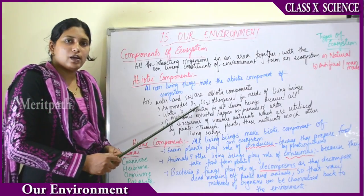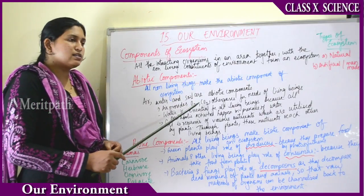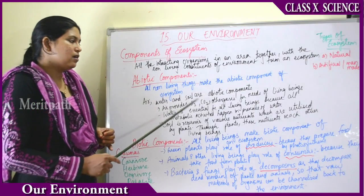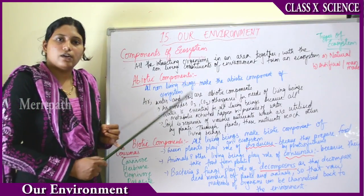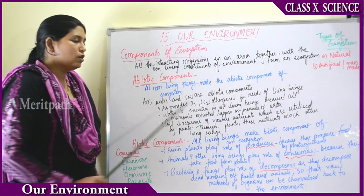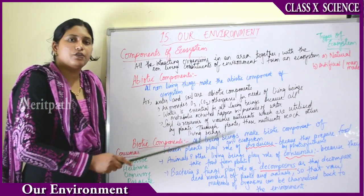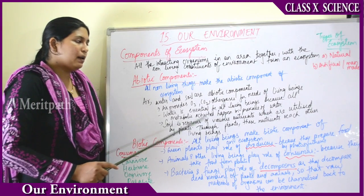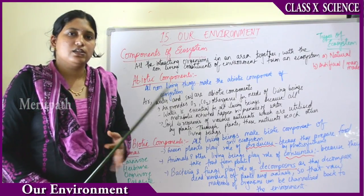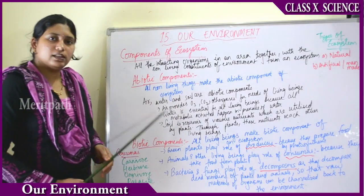Examples of abiotic components are air, water, and soil. Air is composed of oxygen, which is required for humans and animals, and carbon dioxide, which is required for plants. Water is essential for all living beings because all metabolic activities — digestion, transportation, excretion — happen in the presence of water.